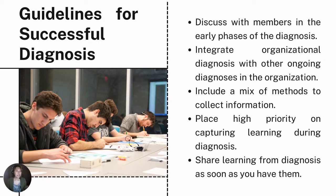Number three: include a mix of methods to collect information. For example, review relevant documentation such as strategic plans, policies, procedures, and reports. Administer practical questionnaires to collect information anonymously if appropriate. Then follow up your questionnaires with various interviews, which might be closed or open-ended and with individuals or groups.